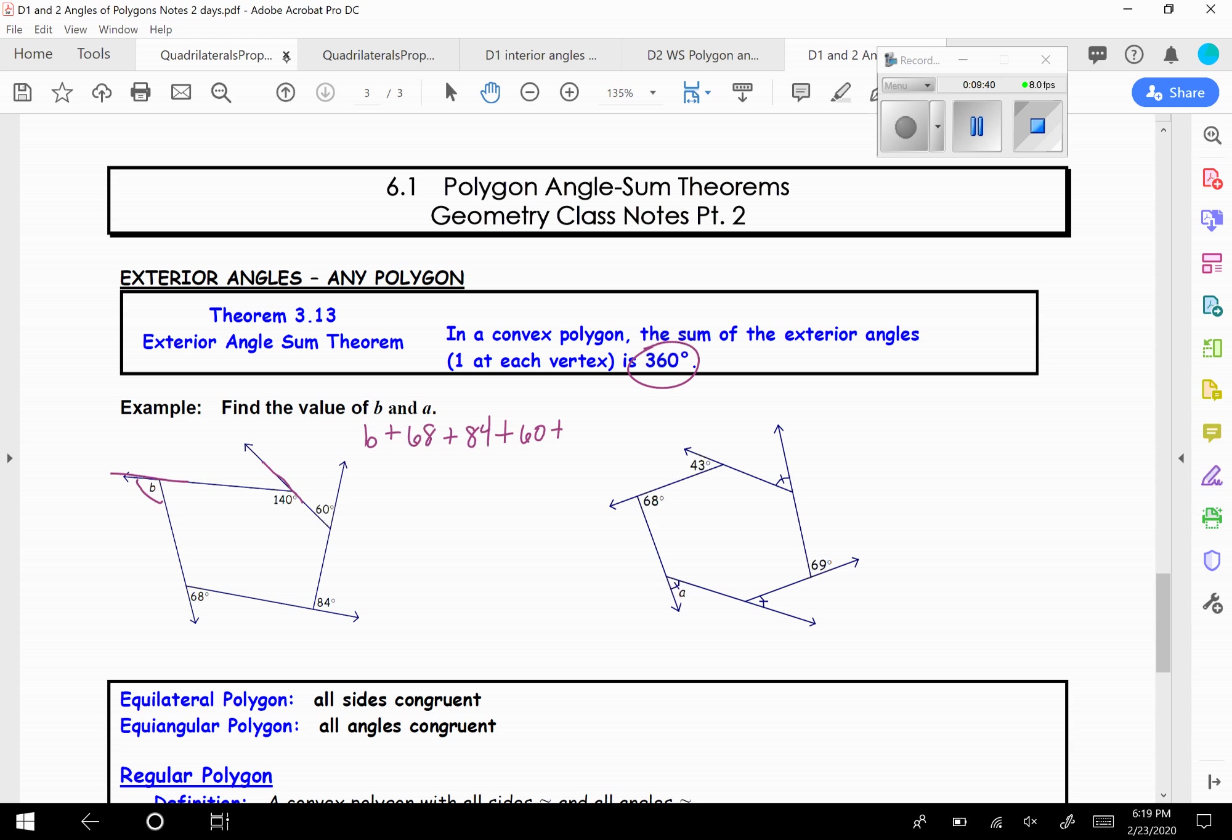So here we have B plus 68 plus 84 plus the 60 plus... Now be careful. The 140 is on the inside. But we can see it's making the straight line here. So it would add up to 180. So 180 minus 140 means this is going to be 40. So plus 40. And if you add up all of these exterior angles, they need to add up and equal to 360. So B plus, and then let's add 68 plus 84 and 60 and 40, well that adds up to 252. And so then just subtract. And so you get B is 108.